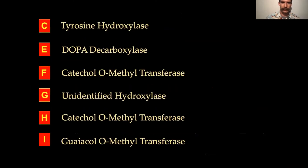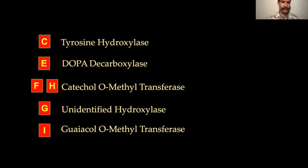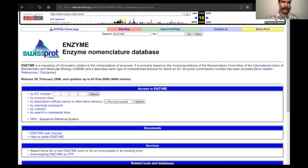It turns out that enzymes F and H are actually the same enzyme, which makes things easier. So we only need to insert five enzymes total into the yeast to presumably produce mescaline. We can go to SwissProt, a database, to find them.